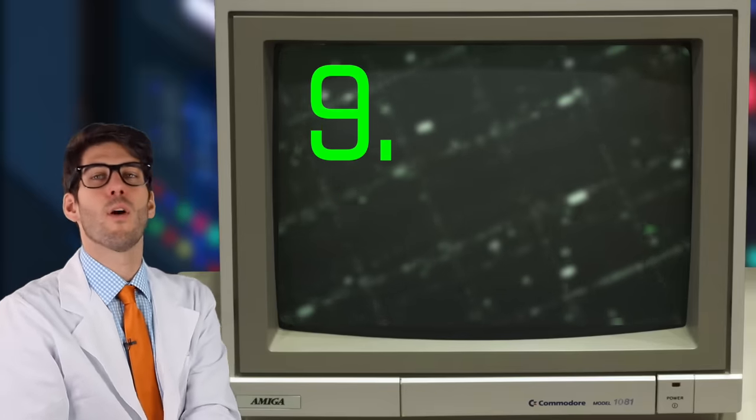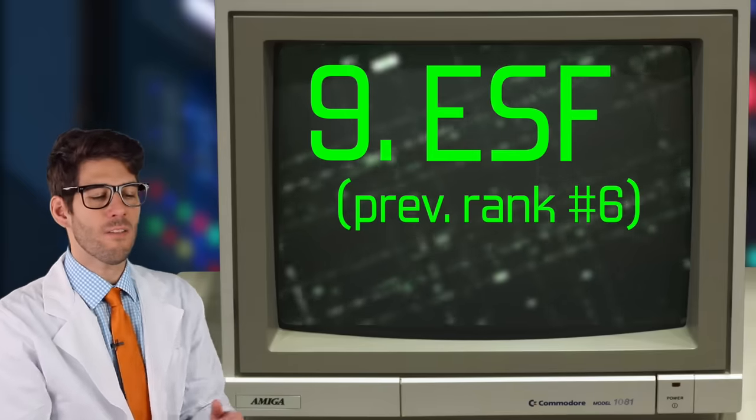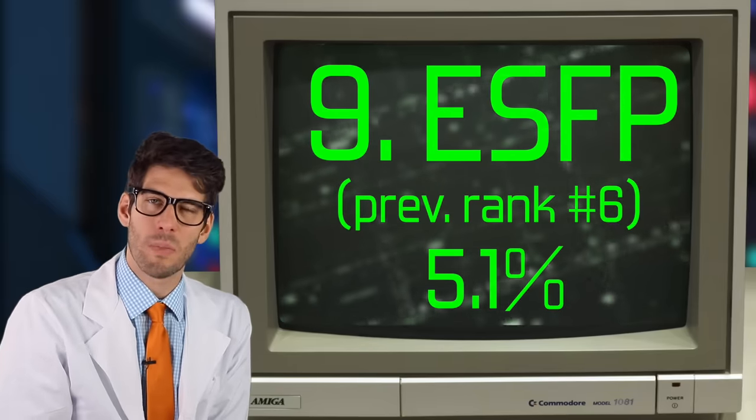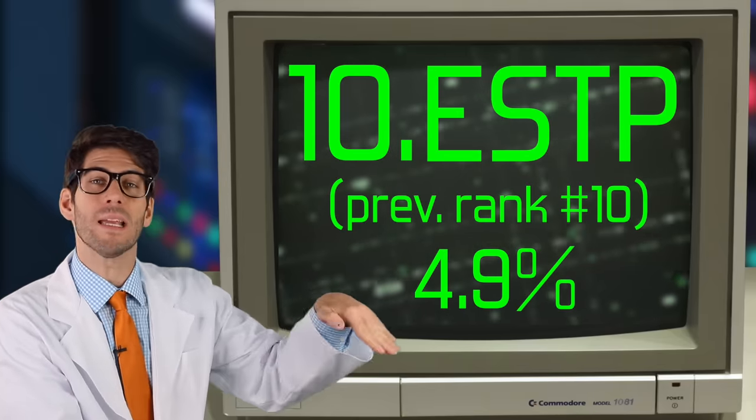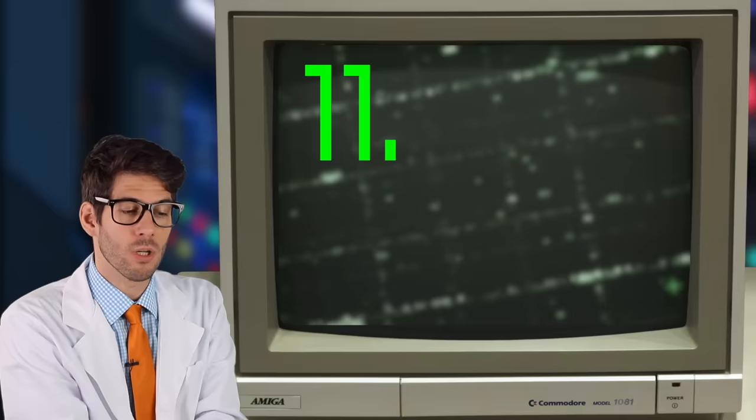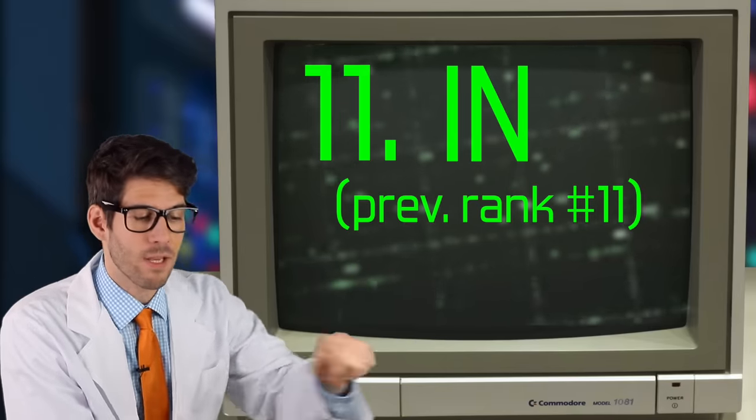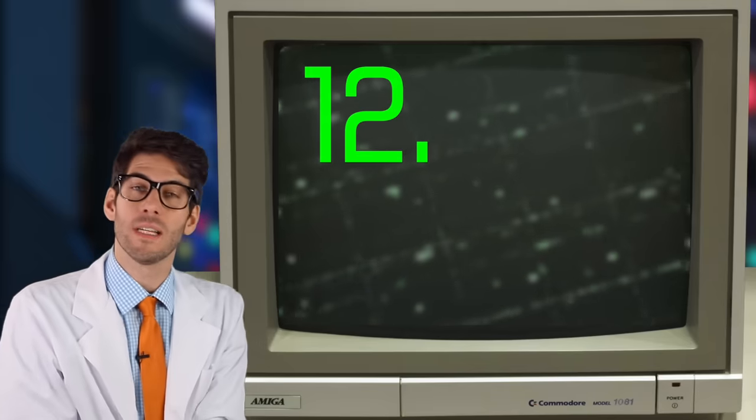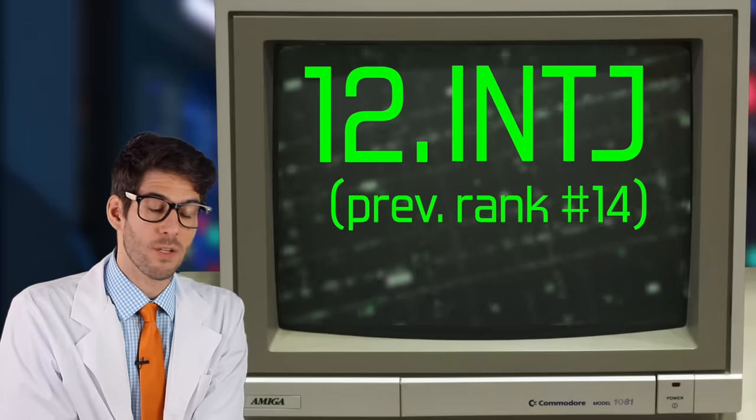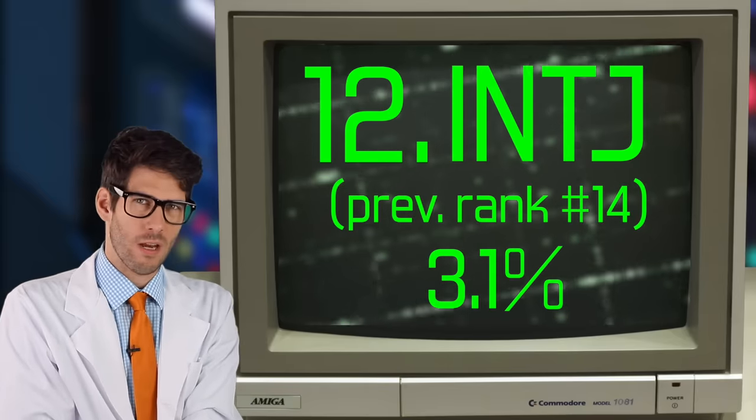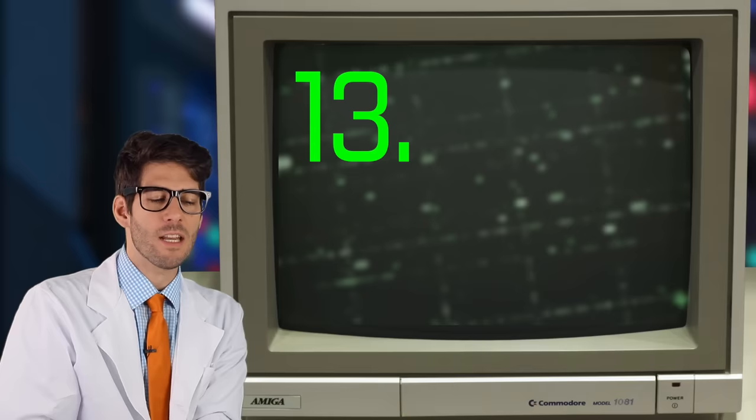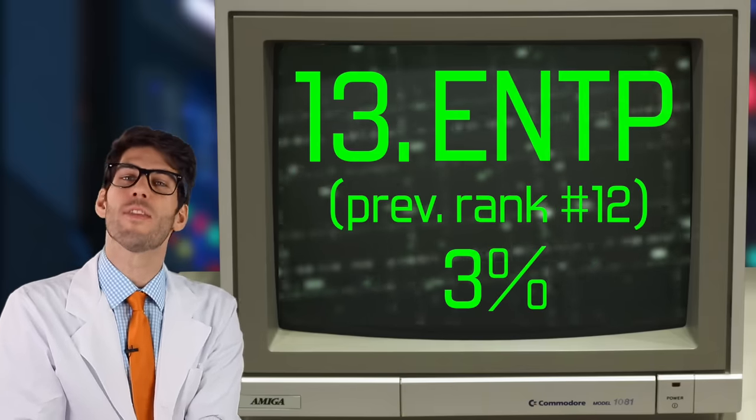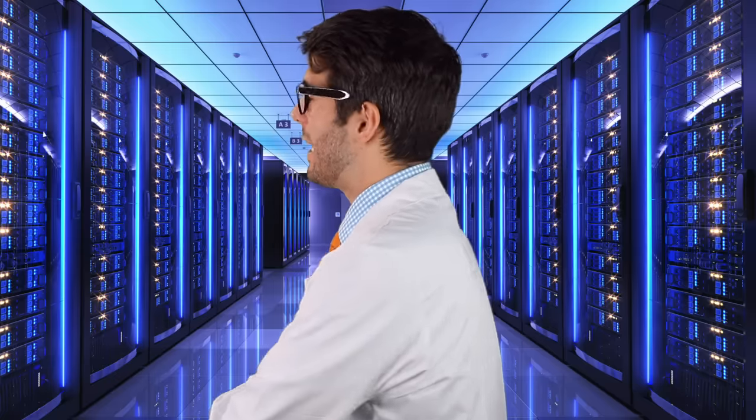The number nine spot, having fallen from the number six spot previously, is the ESFP with 5.1% of the population. Number 10 is the ESTP with 4.9% of the population, same ranking as it was last time. Number 11 also is holding its rank from last time, the INTP with 4.5% of the population. Coming in at number 12 is the INTJ. This has moved up the list from the number 14 spot, with 3.1% of the population. Coming in at number 13 is the ENTP, with 3% of the population.